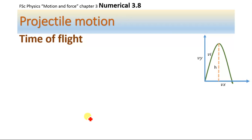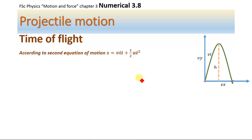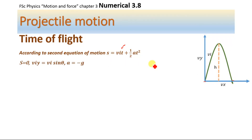What is the time of flight? The time of flight is the total time taken by the projectile to travel from the initial point to the final point. According to the second equation of motion, S = VIt + ½At². Using this equation, we will determine the total time of flight. For determining the total time, we will deal with the vertical velocity only — we are dealing with the vertical component of the velocity.